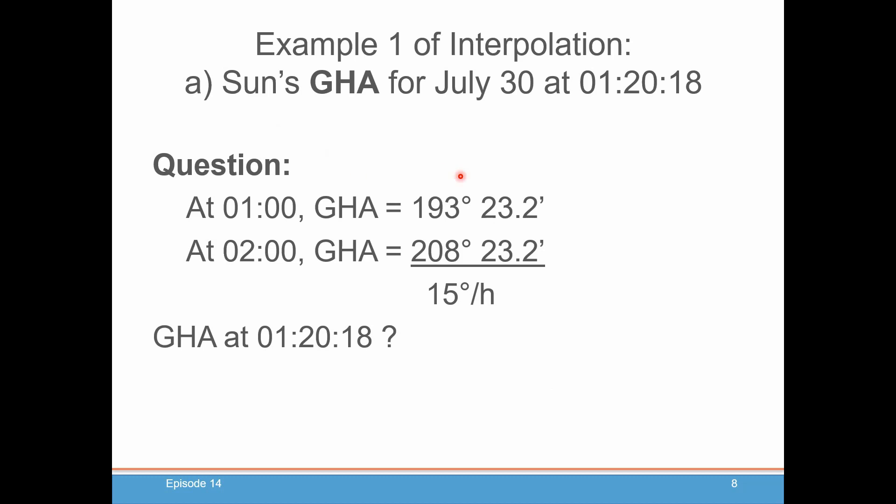Just as a reminder that the sun turns around at approximately 15 degrees per hour. If you were to subtract the 0 100 hours from the 0 200 hours, you'd see that, yep, sure enough, sun's turning at about 15 degrees per hour. Let's get going at 0 120 and 18 seconds. Let's get the GHA.